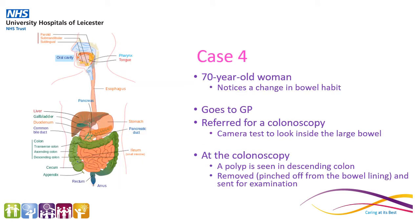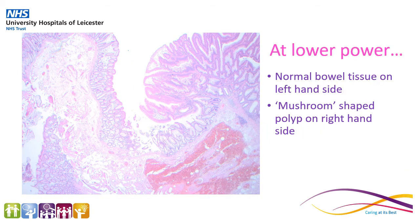Case 4 is a 70-year-old woman who notices a change in bowel habit. She goes to her GP and is referred for a colonoscopy. This is another camera test which looks at the large bowel. At the colonoscopy, a polyp is seen within the descending colon. This polyp is removed, pinched off from the bowel lining and sent for examination. This is a picture of the polyp at low power and we can see normal bowel lining on one side, and then we've got this mushroom-like growth of tissue on the right-hand side.